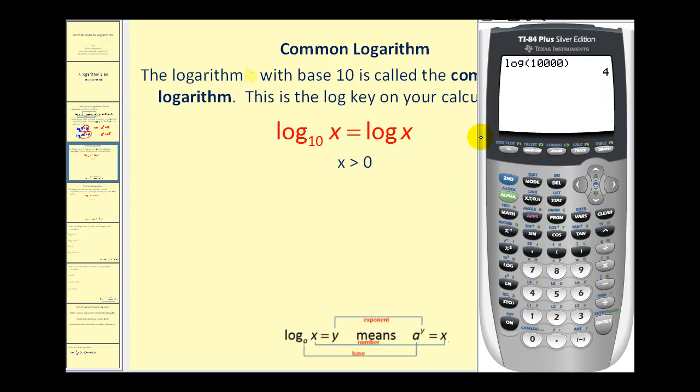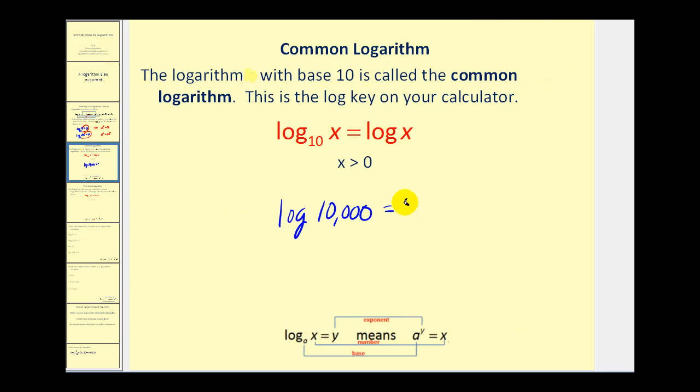Let's go ahead and write that down. If I asked you why is log ten thousand equal to four, you should be able to tell me this is common log, which means that's base ten. And so what this means is ten to the power of four must equal ten thousand. So it's great to use the calculator to evaluate common log, but I think it's important that you understand what you're finding. In other words, you're finding the exponent for which you raise ten to get the number ten thousand.